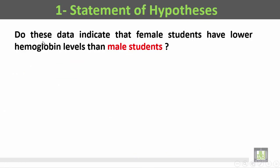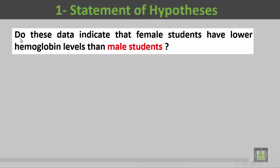Going back to the research question: Do these data indicate that female students have lower hemoglobin levels than male students?